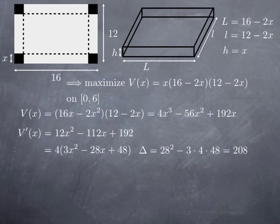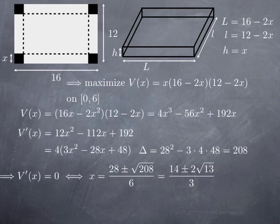And then we subtract 4 times the product of the other two coefficients, 3 and 48. So that gives me 208. That's positive, so we're going to get two possible values for x. Namely, 28 plus or minus the square root of the discriminant, 208, divided by 2 times the coefficient of x squared, so divided by 6.